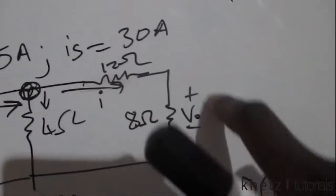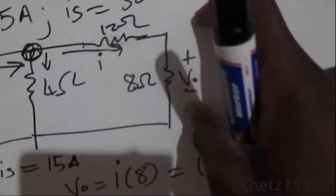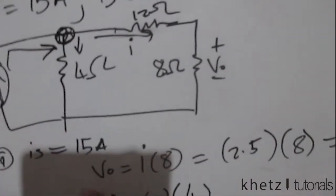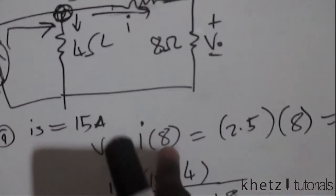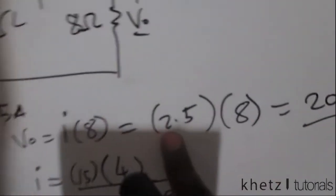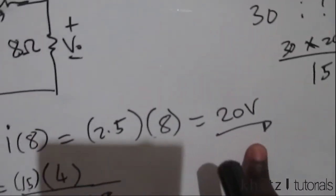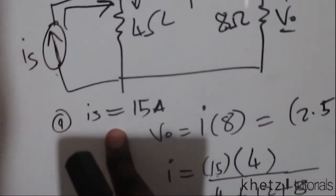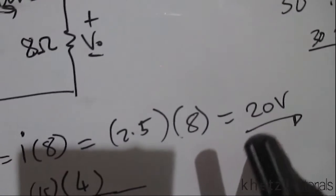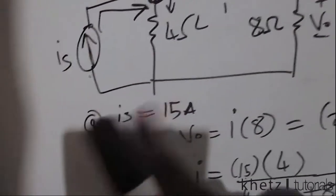But what is VO? VO is actually I multiplied by the resistor which it is shown across. So VO equals I multiplied by 8. So we found our I to be 2.5 and then we're going to multiply that 2.5 by 8, and that gives us 20 volts. So when IS is 15 amperes, we have 20 volts.